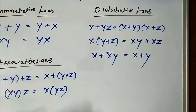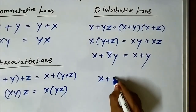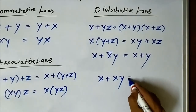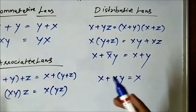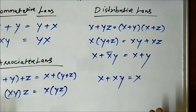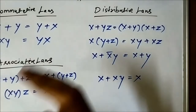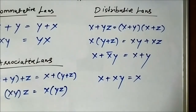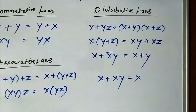Another important law is the absorption rule: x plus (x times y) equals x. We can also prove these identities by showing LHS equals RHS, but that will be done in separate videos since it is a lengthy procedure to prove each identity. Here we are simply stating the basic laws of Boolean algebra — what the identities and rules are.